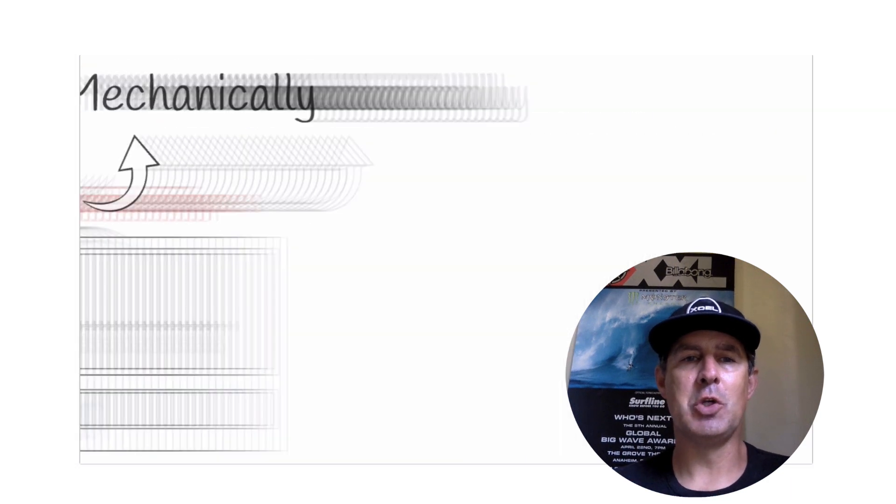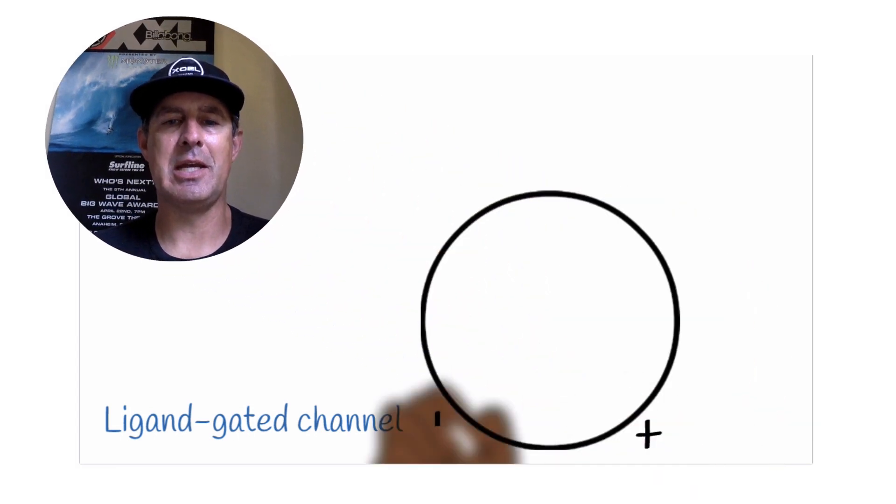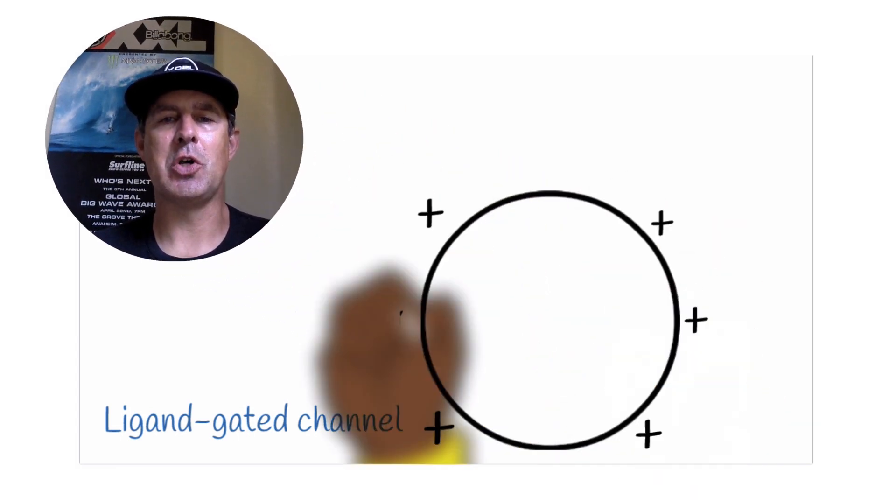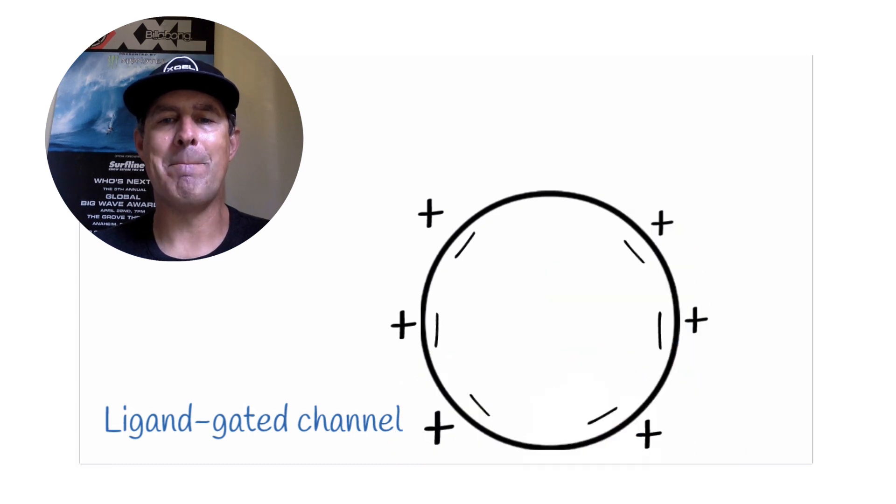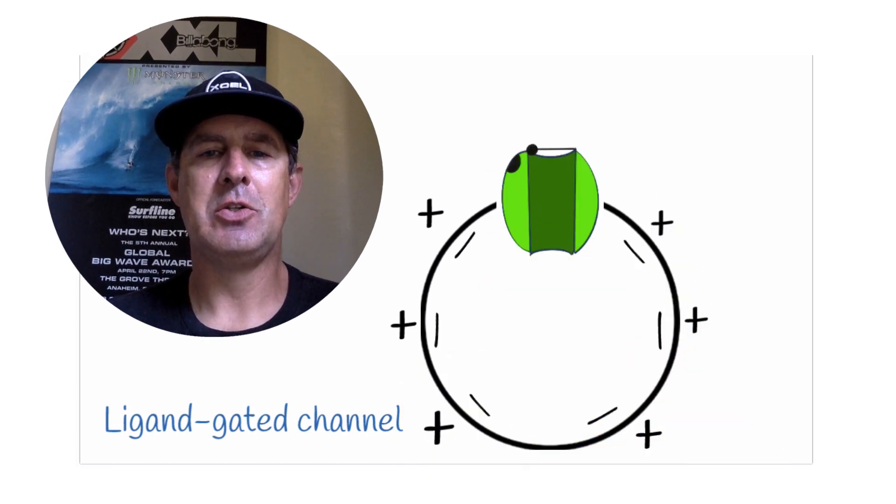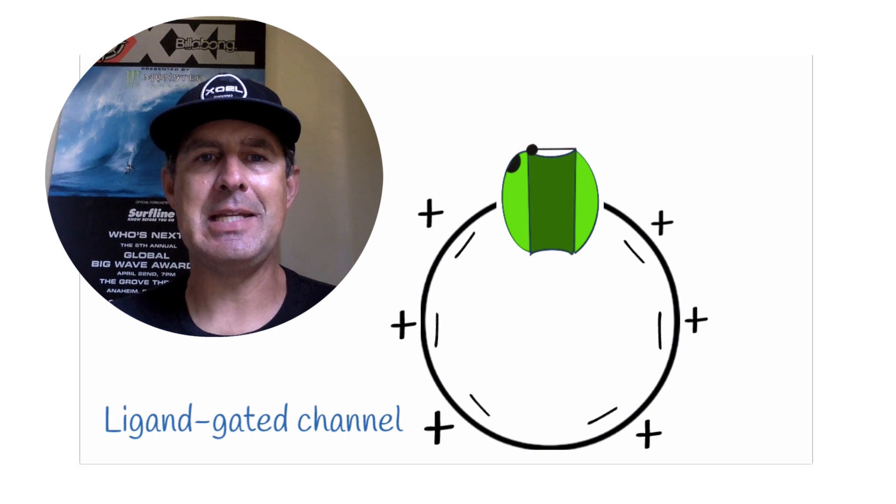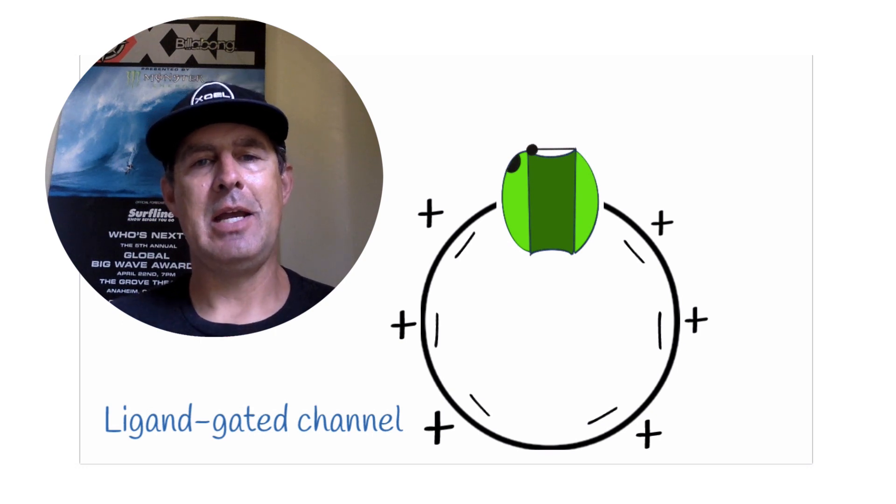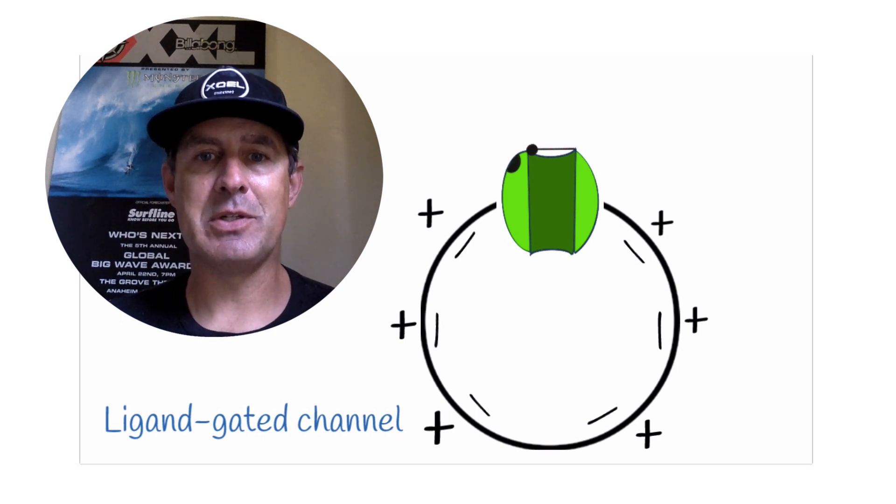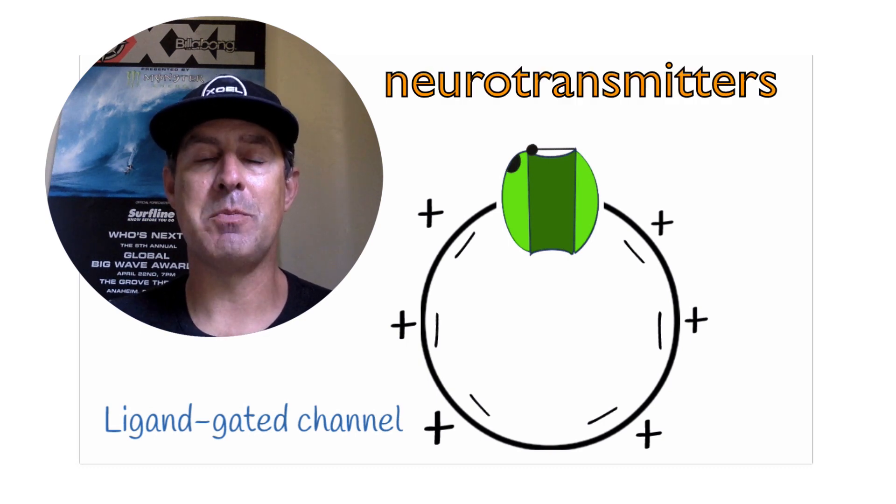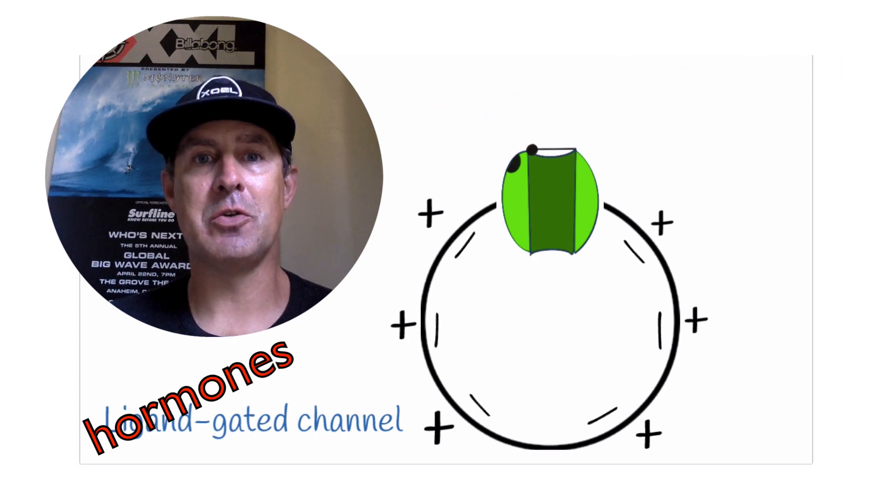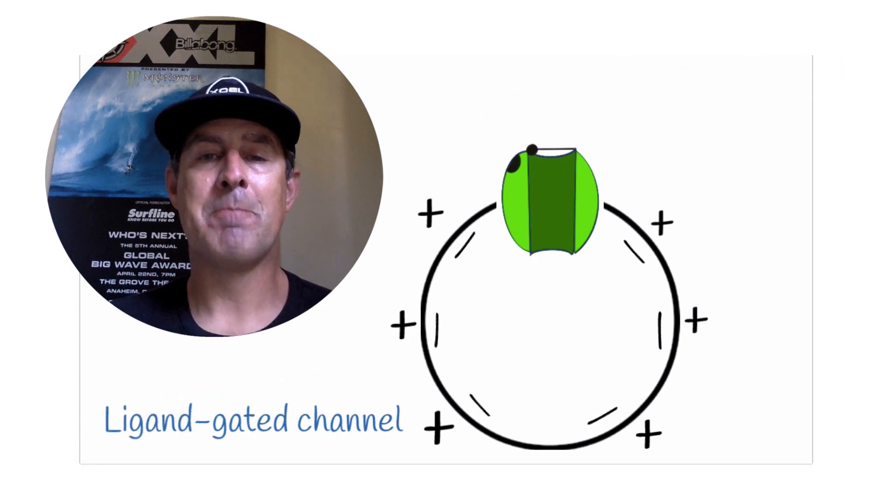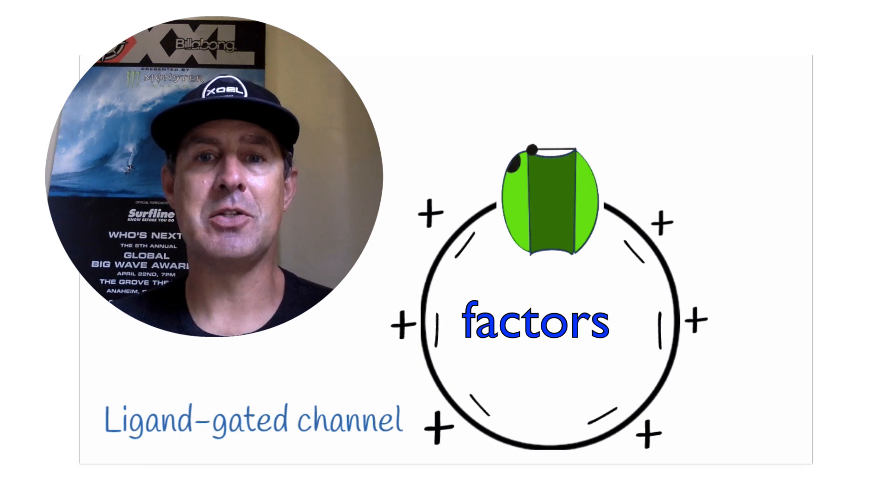The first one we'll look at are ligand-gated channels. Once again, ligand-gated channels open up due to a signaling molecule binding to that channel. So a ligand is a signaling molecule. And in the body, we have a number of different types of signaling molecules: neurohormones, hormones, neurotransmitters, paracrines, autocrines. There's also molecules known as factors that could be functioning as ligands as well.